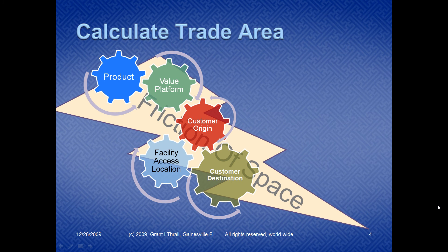Calculating a Trade Area is complex. First of all, we have to start out with: what is the Product? Is the Product an Office Building — a Class A or a Class C Office Building? Is the Product a Retail Store? Is it a Restaurant? Is it a Regional Shopping Center? Once we identify the Product, then that is interdependent — those gears are intermeshed — with what the Value Platform is. The Value Platform is the total experience that is offered by the location and by the good consumed.